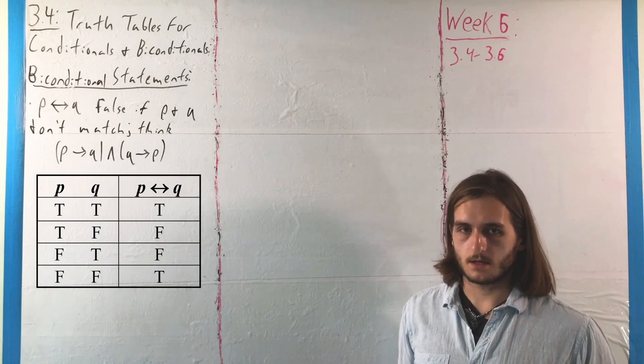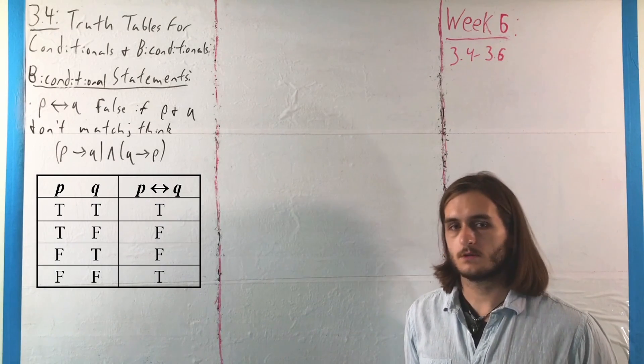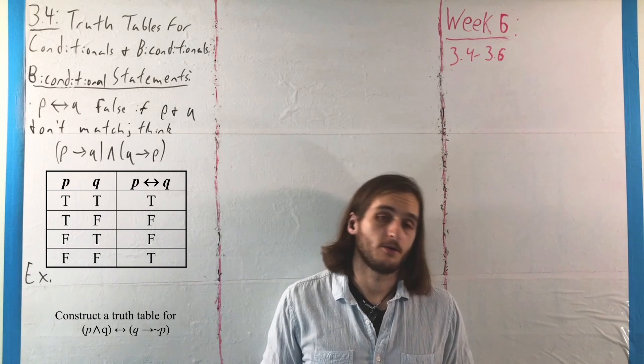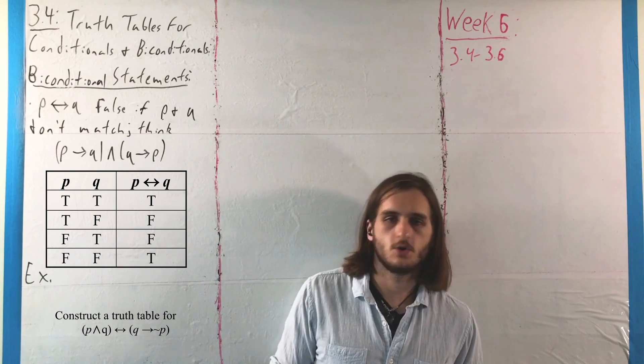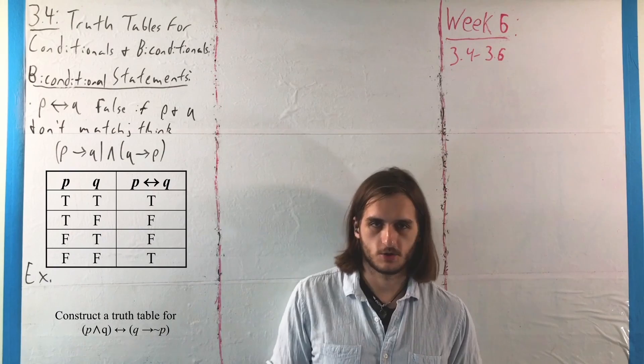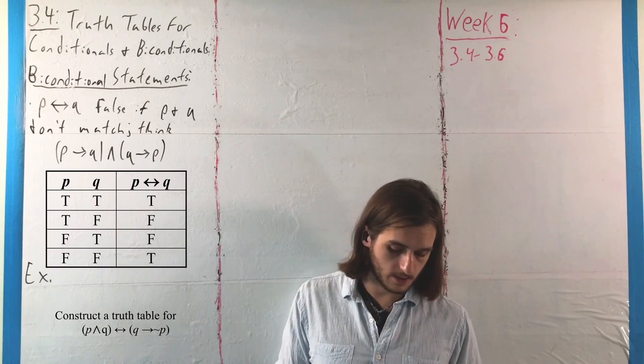So, let's take another example here so we can get a better understanding of how this case works. For this, we want to construct a truth table for the compound statement p and q if and only if q implies not p. So, this is going to be quite a mouthful and we're going to have to be really careful going through our steps here, so I'm going to try and take it slowly, talking my way through this table and hopefully the nice colors will help exemplify and illuminate what's going on as we're working here.